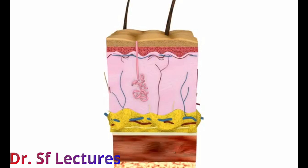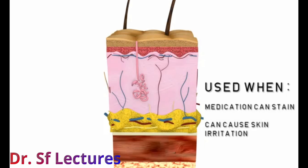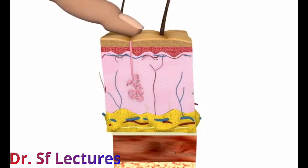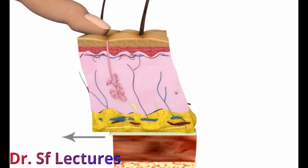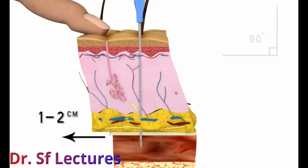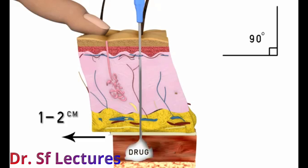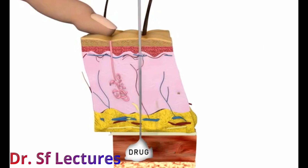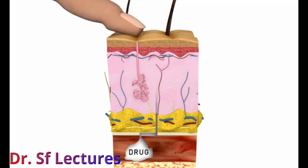The Z-track route is used when the medication can stain or cause skin irritation. For the Z-track technique, the skin is pulled to one side, which moves the subcutaneous tissue approximately 1 to 2 cm. The needle is inserted at a 90 degree angle and after aspiration the medication is inserted into the muscle, whereupon the nurse waits 10 seconds. This allows the medication to disperse within the muscle. After the time lapse, the skin is released as the needle is withdrawn, ensuring that the skin closes over the injection site preventing leakage onto the skin.